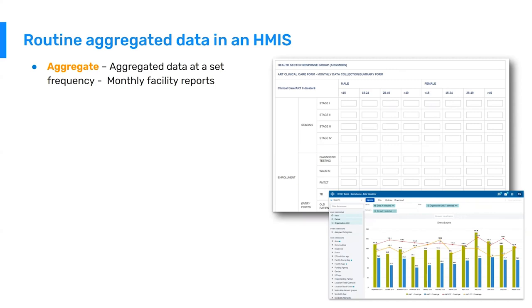Let's take a deeper look at each one of these. The first is routine aggregated data. Routine aggregated data is data captured in a summed format for a certain period or frequency of time. The most common example is monthly facility reports, where a health facility fills out a monthly summary report and enters it into DHIS-2. You get aggregated data representing all patients seen, all clinical services delivered, and all drugs administered over the course of that month.